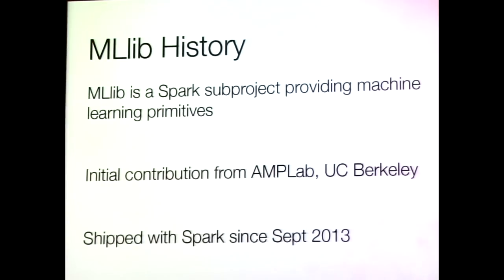MLlib has more than 60 contributors from many different universities and companies, making it one of the most active parts of Spark — because Spark makes machine learning so easy. It's very hard to give credit to a single person for MLlib. There are maybe 20 different people at Berkeley who started it, another 3 at Databricks, and at least 60 people outside contributing. It's absolutely an open source effort.